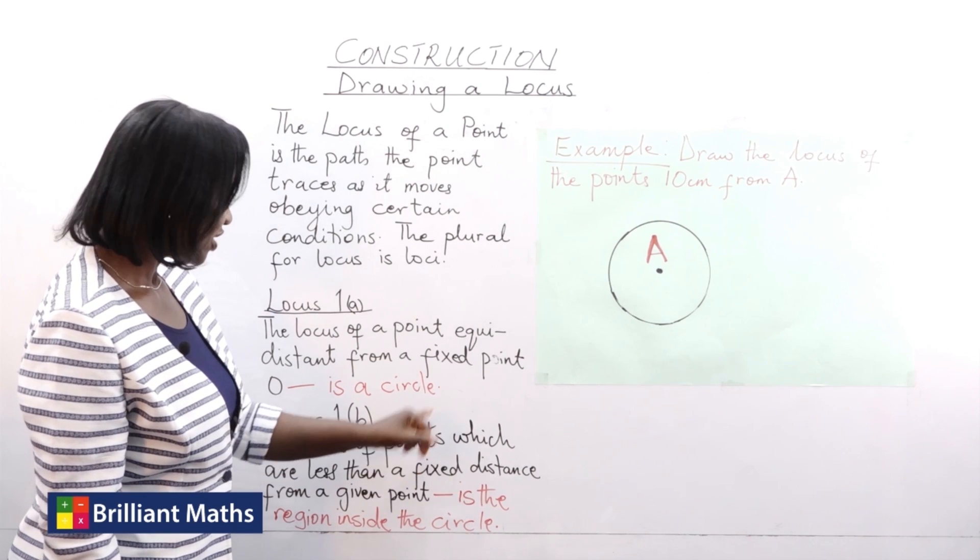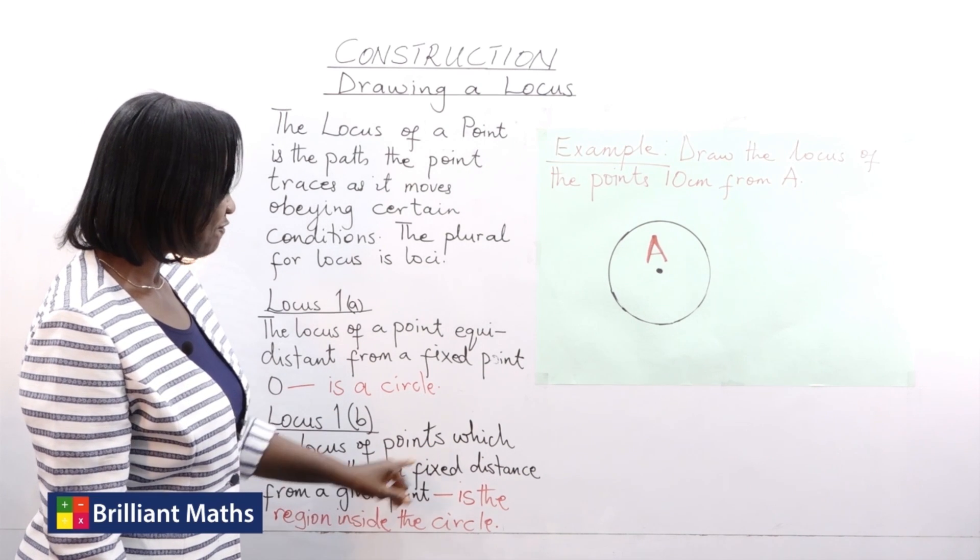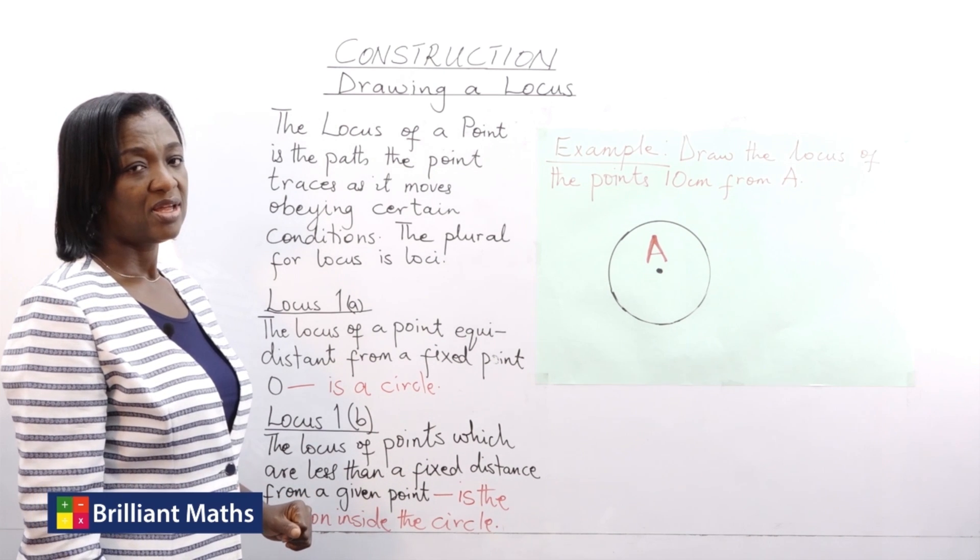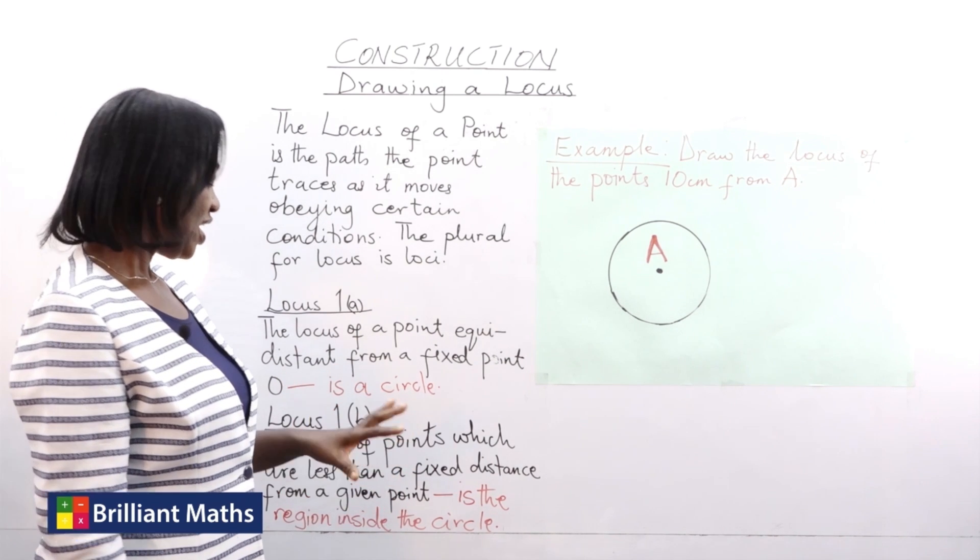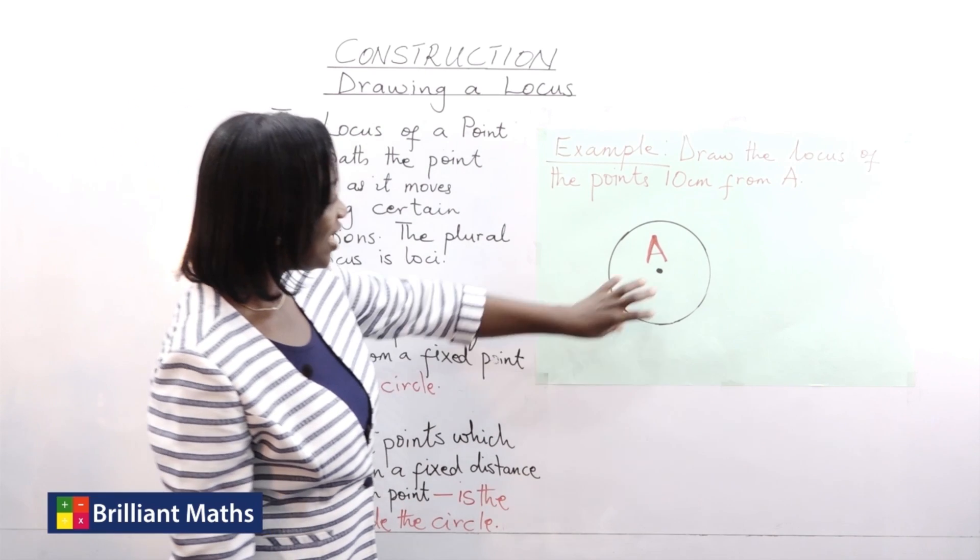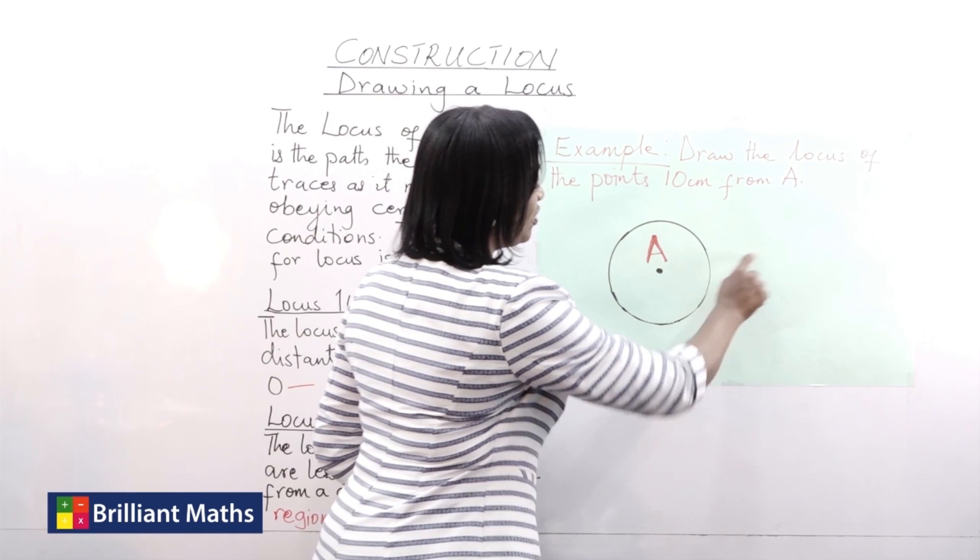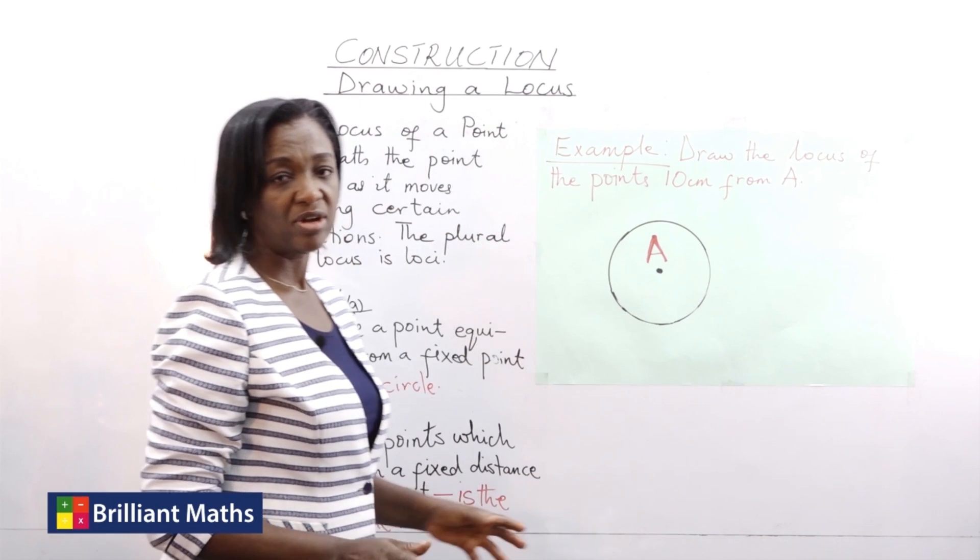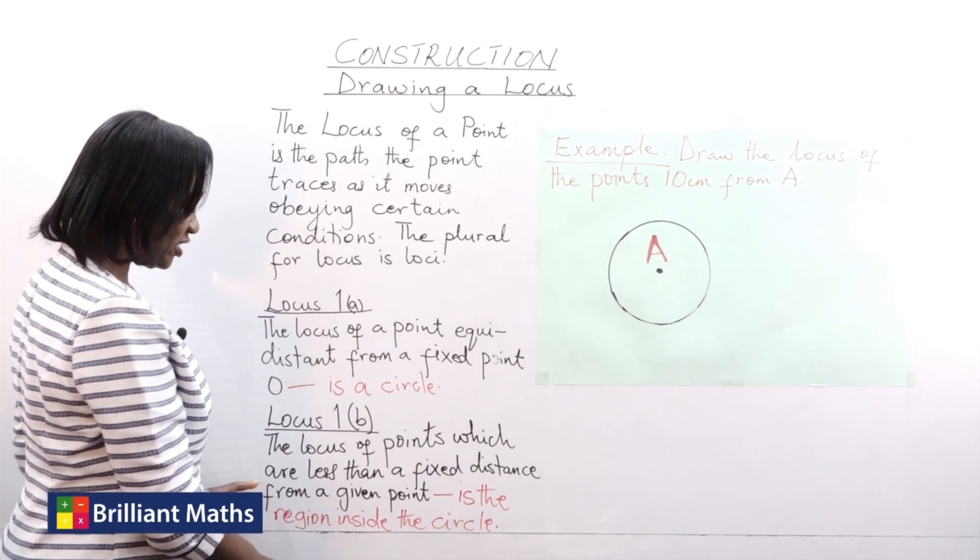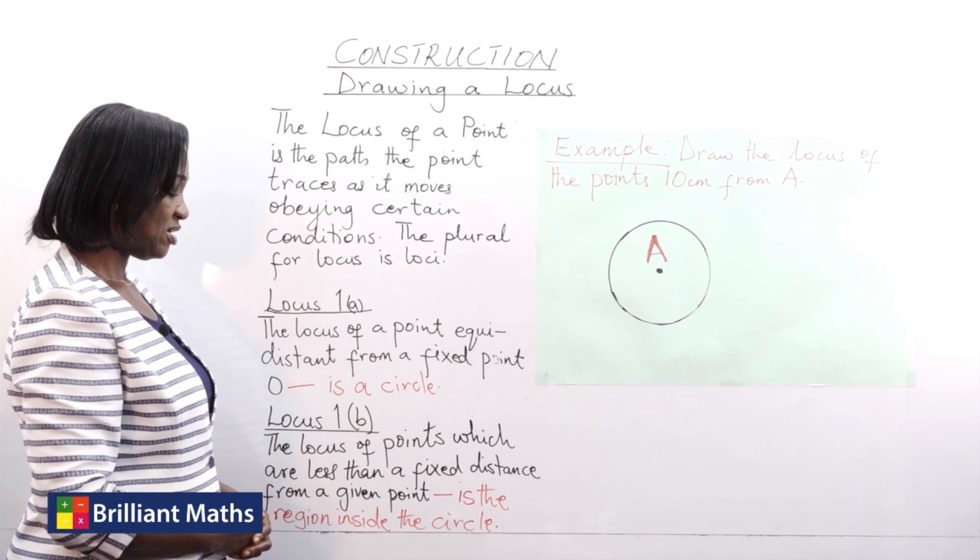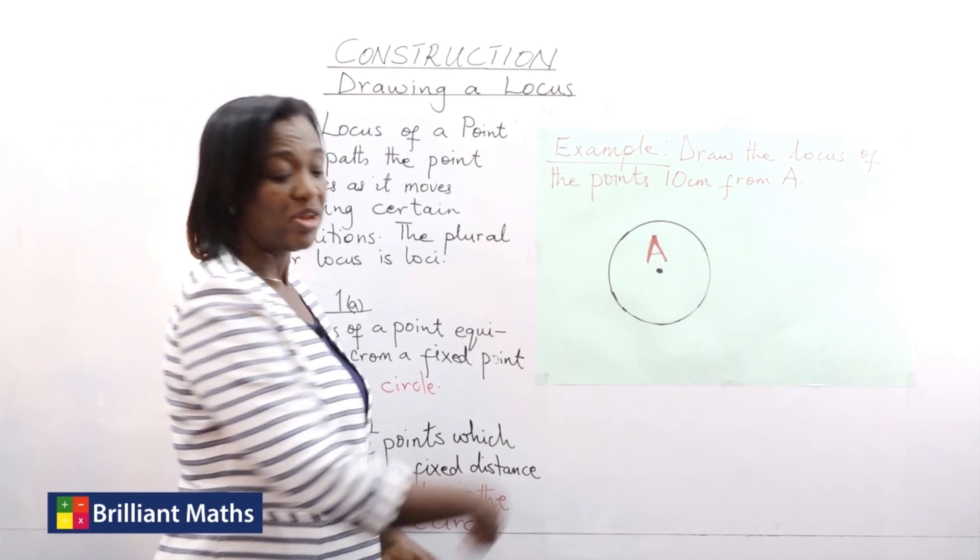Locus B: the locus of points which are less than a fixed distance from a given point. That locus is the region inside the circle. For the first one it is the circumference of the circle. We have agreed on that. But the locus of the points which are less than 10 centimeters from point A would then be